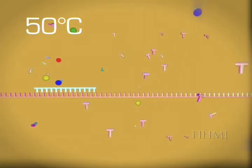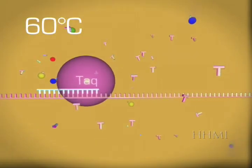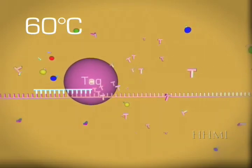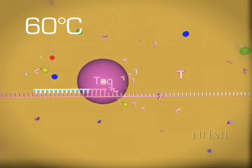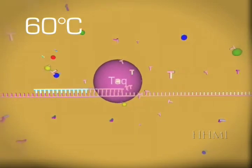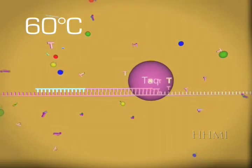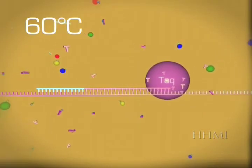The temperature is then raised to 60 degrees Celsius. At this temperature, the taq polymerase is activated and starts assembling DNTPs along the single strand of DNA until it randomly incorporates a fluorescently marked nucleotide or DDNTP. At this point, the chain is stopped.